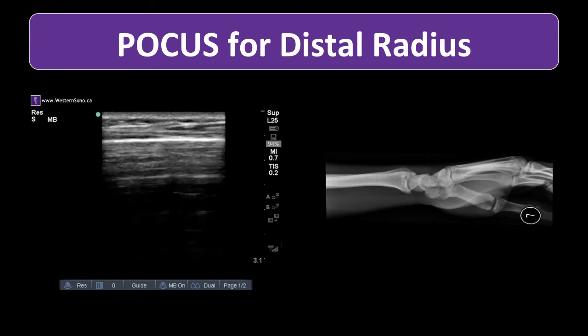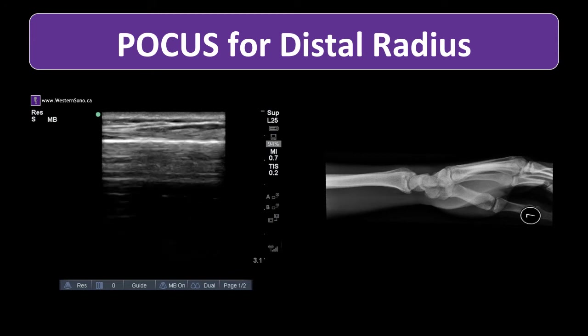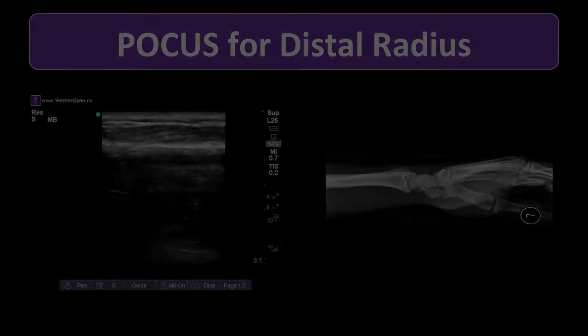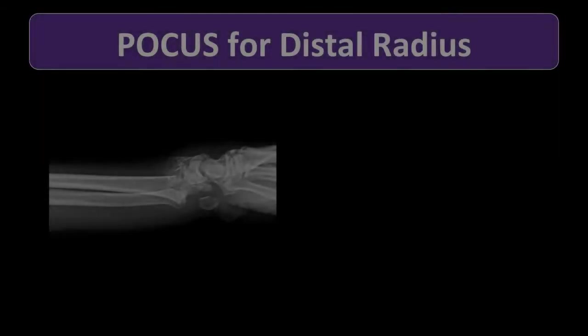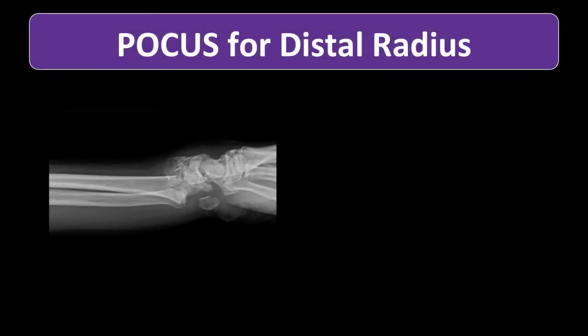A lateral x-ray of a normal wrist is seen for comparison. Now let's look at a fractured wrist. Looking at the x-ray, it is immediately obvious that the bone is disrupted — in this case, it is dorsally displaced and also dorsally angulated, as in the typical Colles' fracture pattern.